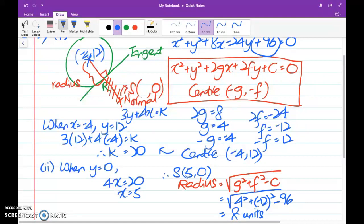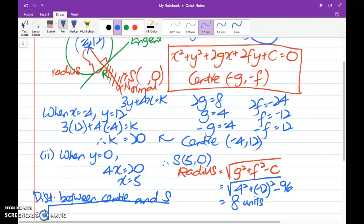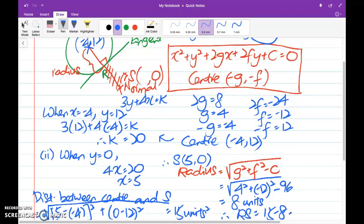So now the question is, how do we find the center of the circle to point S? Let me just slide it down a little bit. Distance between center and point S. Since we have the coordinates of these two points, therefore we make use of our distance formula. So here we go. 5 minus negative 4 square plus 0 minus 12 whole square. And this works out to give us 15 units. Therefore we conclude the length of RS is simply 15 minus 8 which is 7 units.